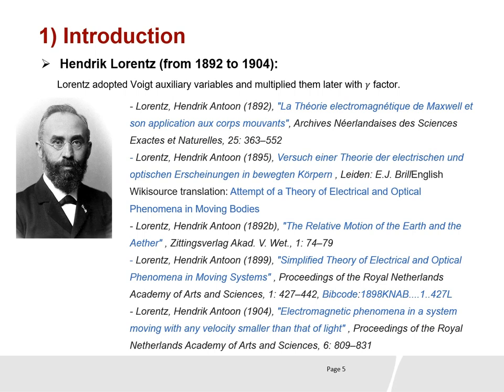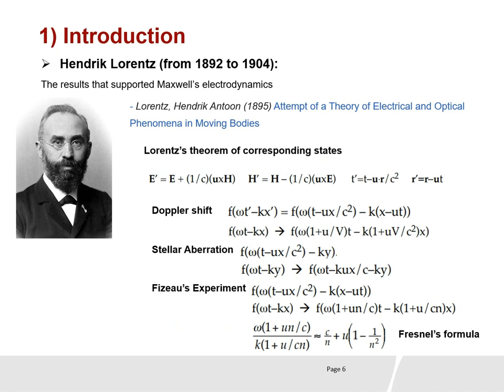Henrik Lorentz liked Voigt's variables and then multiplied these variables by the gamma factor. He wrote many papers from 1892 to 1904 on the electromagnetism of moving objects. In his paper of 1895, "Attempt of a Theory of Electrical and Optical Phenomenon in Moving Bodies," Lorentz used Voigt's variables and introduced electric and magnetic field transformation and time and space transformation.